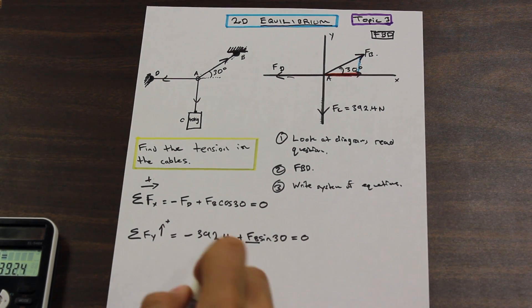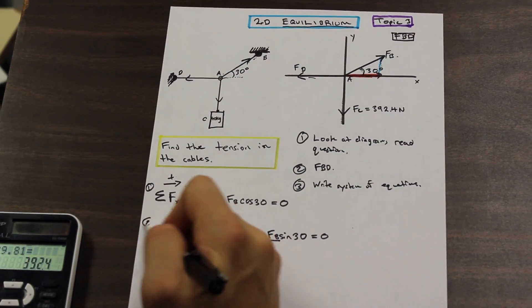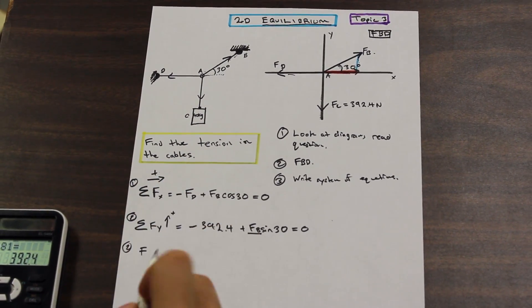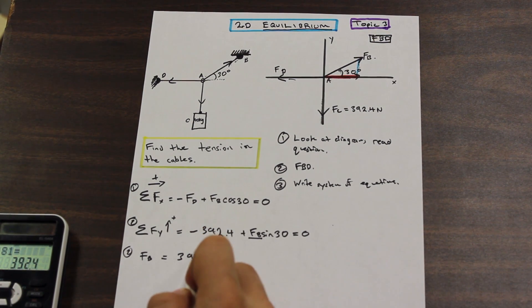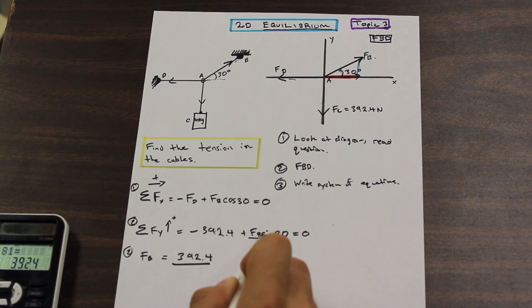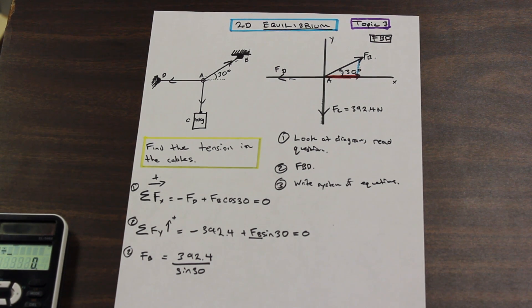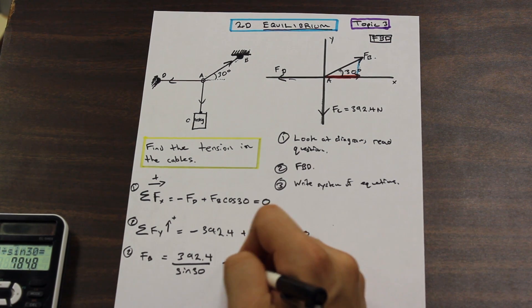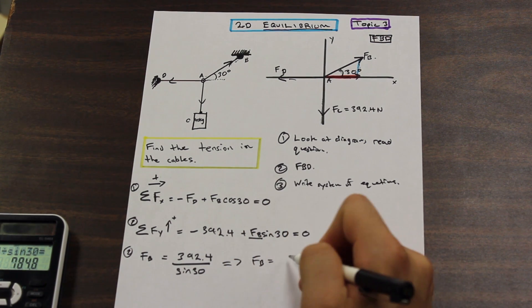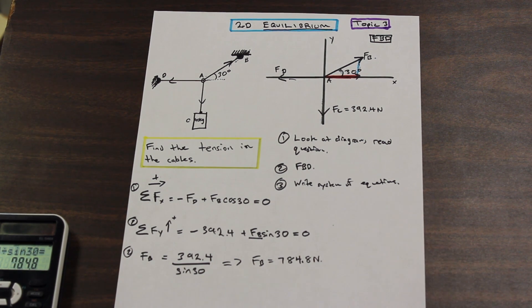We have, let's move this over to the other side. And I'll just number this one and two. We're working with equation two right now. So we have Fb is equal to, let's move that over, 392.4 divided by, and we're just going to divide both sides by sine 30. If we do that in our calculator, we should end up with Fb is equal to 784.8 newtons.